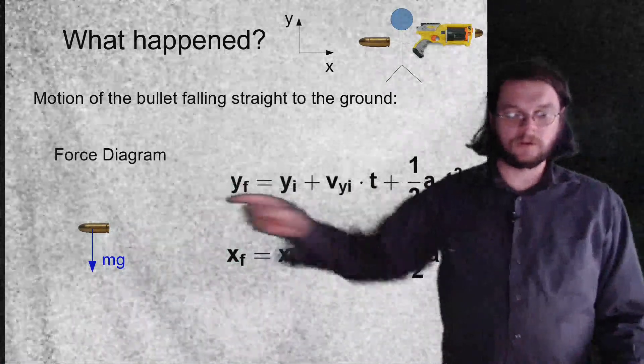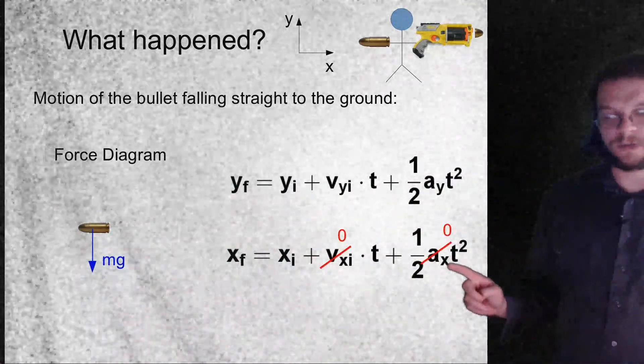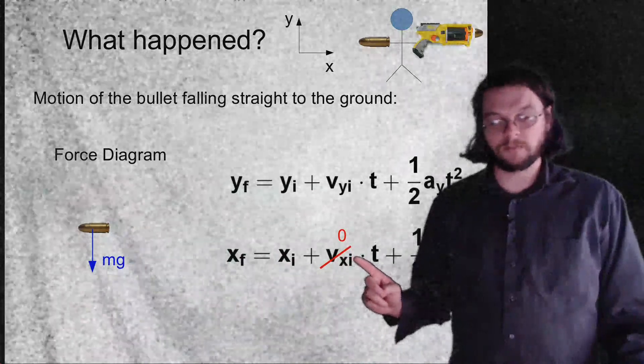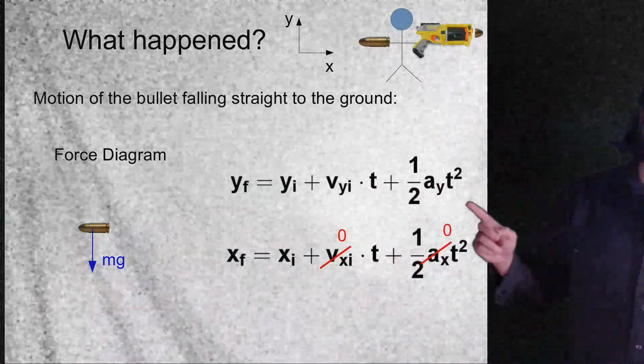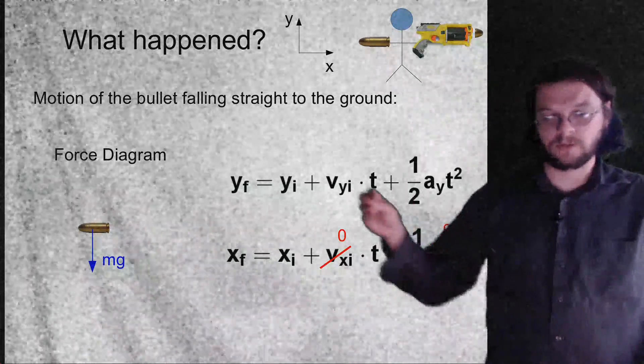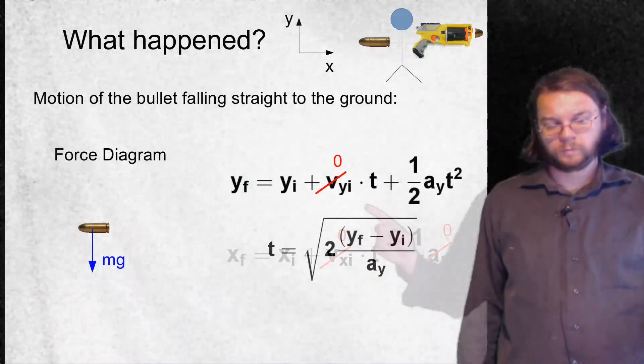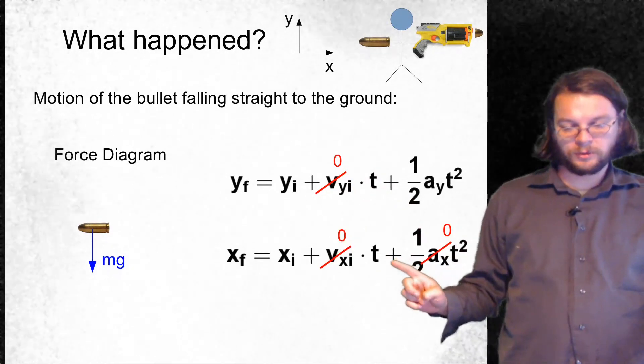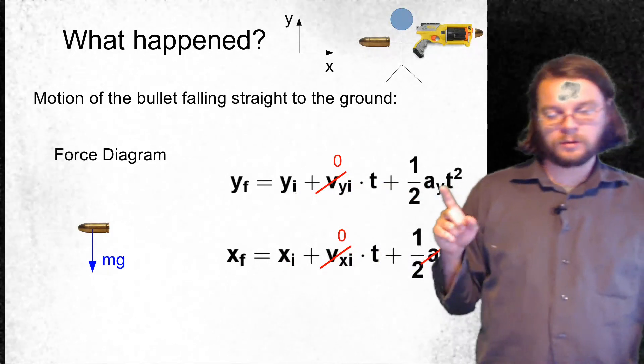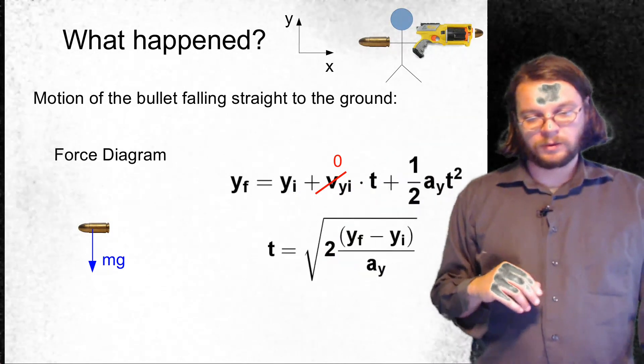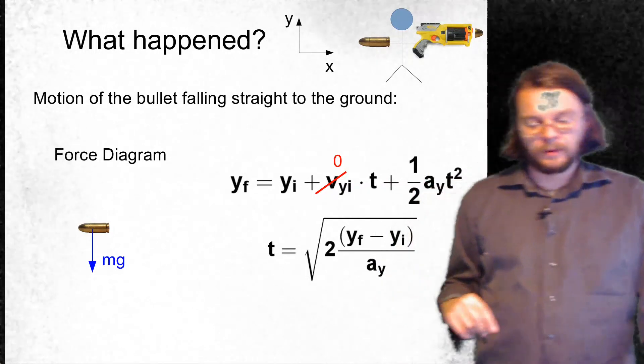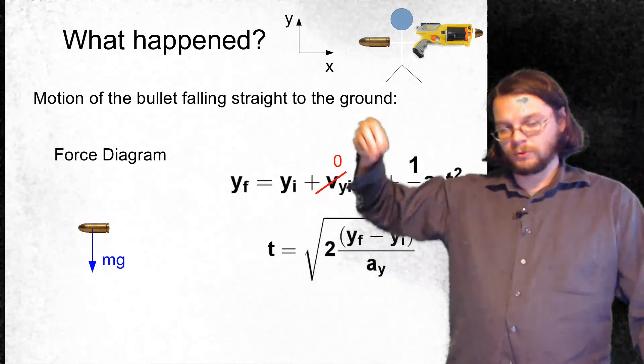So the only force on either one of these things is gravity. And so there's a weight that's pulling down, as you can see. And that's same for the bullet, the thing that's falling and it's same for the thing that's moving off to the right. So just looking at this force diagram and trying to figure out what these accelerations are. Well, if the only force is vertical, well, then there's not going to be any acceleration in the x direction. So that's going to be zero. And we're not tossing it off in a particular direction. And so the initial x velocity is going to be zero.